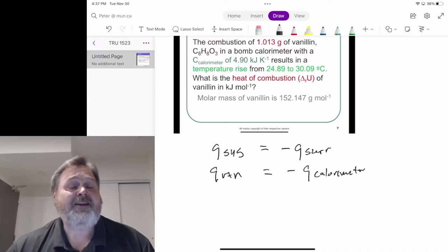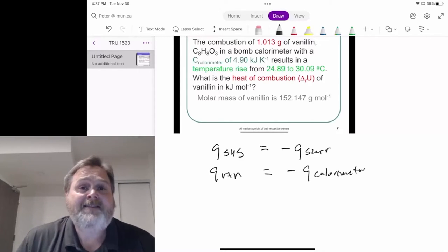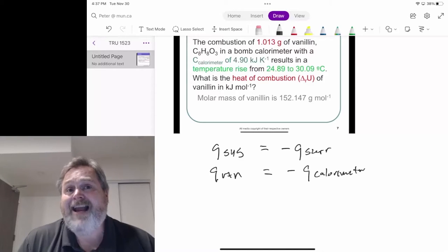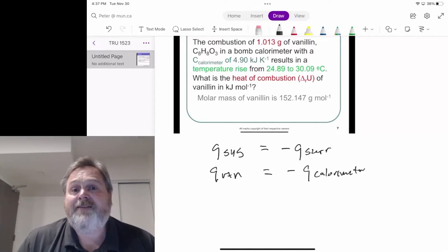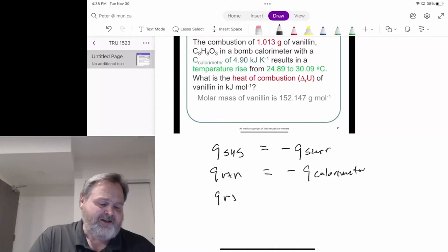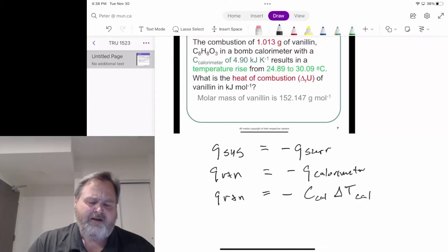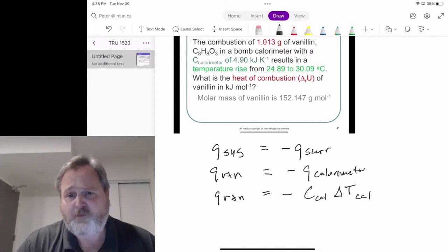Now, we would have seen that heat changes can often be calculated by using the mass of a substance, its specific heat capacity, and its change in temperature. We've said, though, for this calorimeter, that doesn't make much sense because it's made of many, many different pieces. So, in this case, what that means is the Q reaction equals the negative of just the heat capacity of the calorimeter times the change in temperature. And let's be careful. That's for the calorimeter as well.